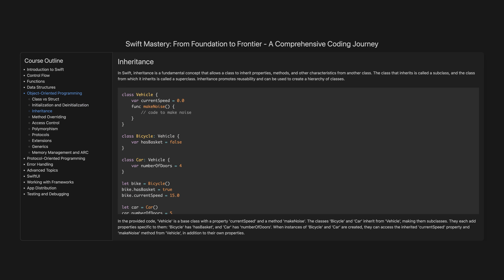Inheritance. In Swift, inheritance is a fundamental concept that allows a class to inherit properties, methods, and other characteristics from another class. The class that inherits is called a subclass, and the class from which it inherits is called a superclass. Inheritance promotes reusability and can be used to create a hierarchy of classes. In the provided code, Vehicle is a base class with a property currentSpeed and a method makeNoise. The classes Bicycle and Car inherit from Vehicle, making them subclasses. They each add properties specific to them: Bicycle has hasBasket and Car has numberOfDoors. When instances of Bicycle and Car are created, they can access the inherited currentSpeed property and makeNoise method from Vehicle, in addition to their own properties.